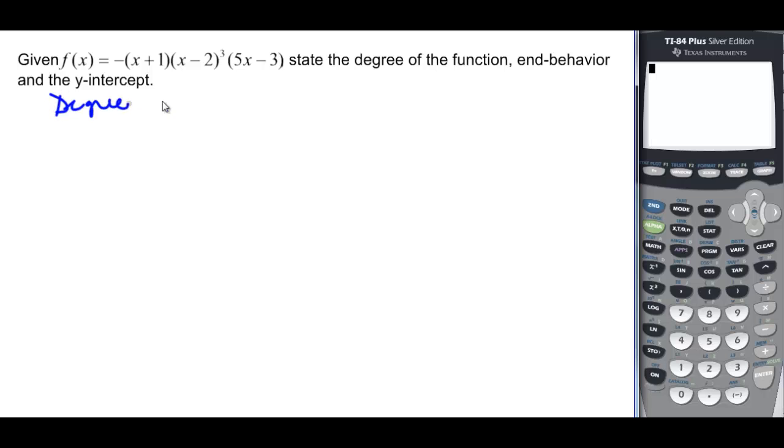So degree. Remember, add those exponents and that will tell you the degree of this polynomial. So 1 plus 3 plus 1 is going to be 5. And then they want to know the end behavior. Well, it's an odd degree. And a is less than 0 here because we've got this negative going on here. So that means that it's going to start in the negative x's.